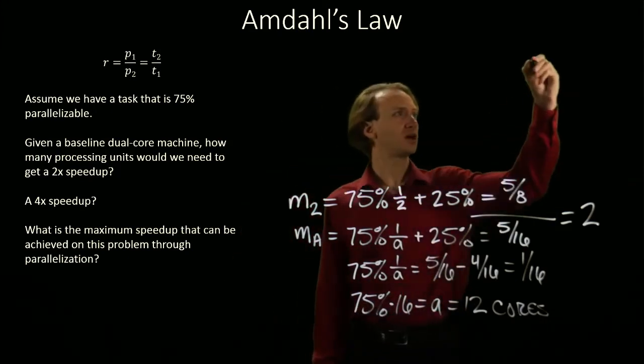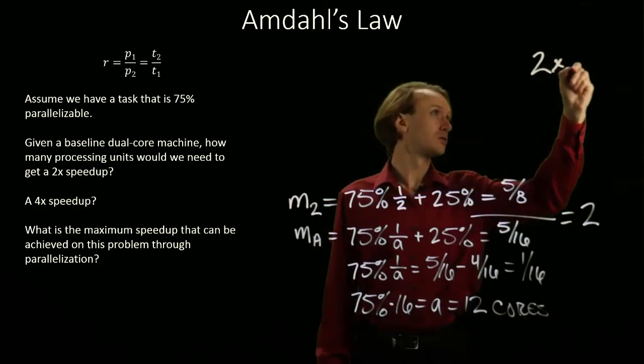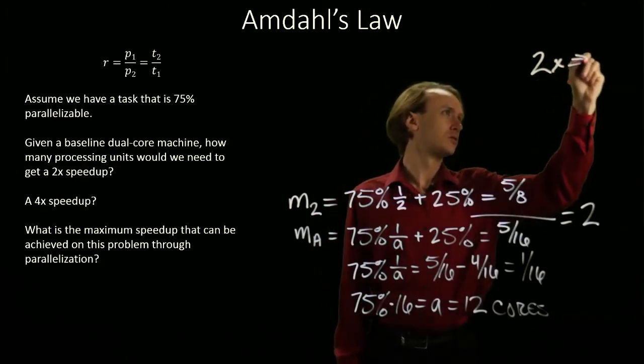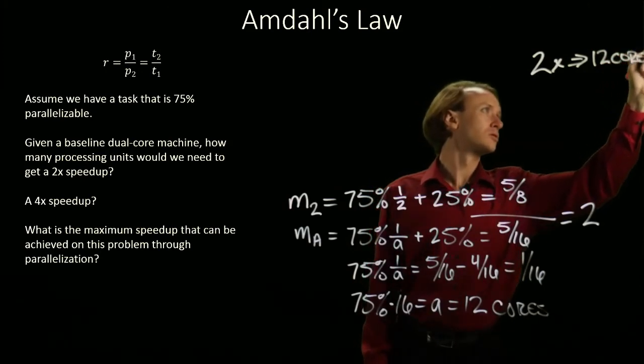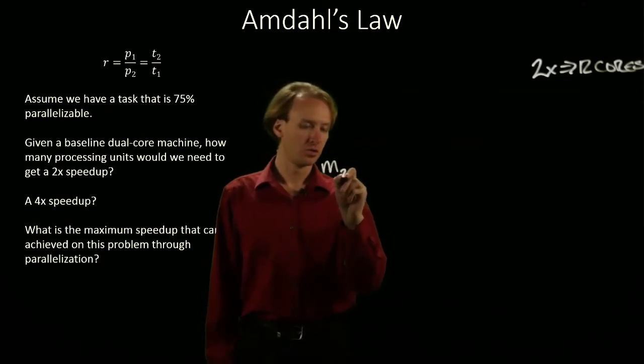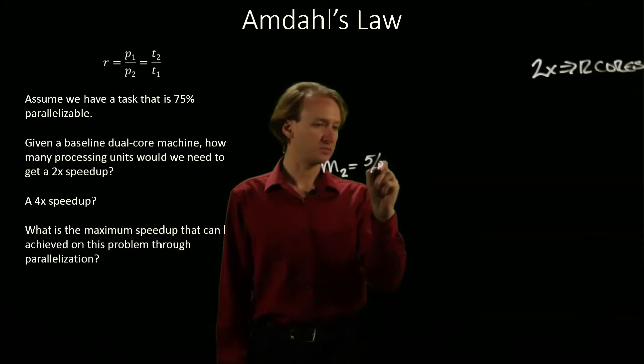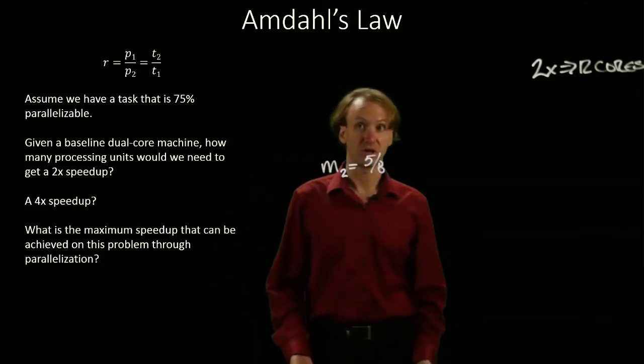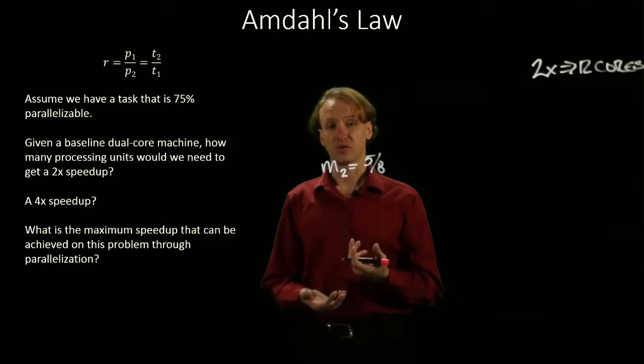So, we'll write this down and then make room for the next part. So, again our dual core machine took 5 eighths as much time as it would on a single core machine. Now, we'd like to get 4 times speed up over this.